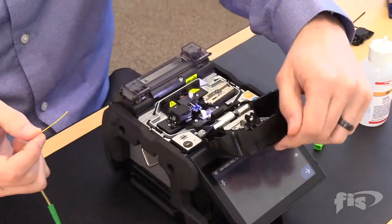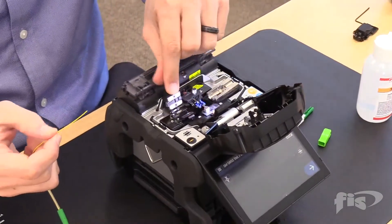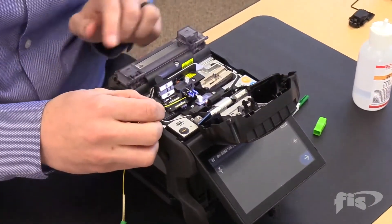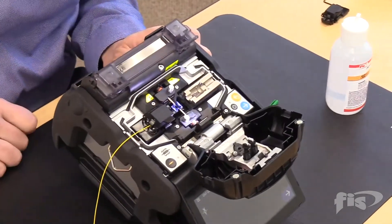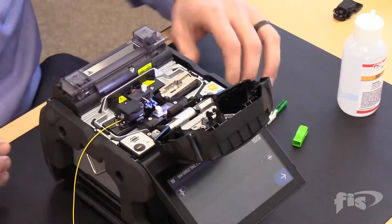Open the lid of the machine, and then the lid of the fiber holder, and lay the fiber into the groove. Notice, the fiber is past the blue pad of the V-groove, but not extended far enough to the electrodes.